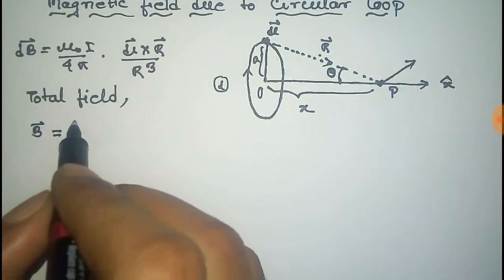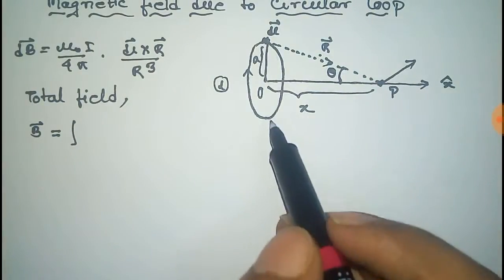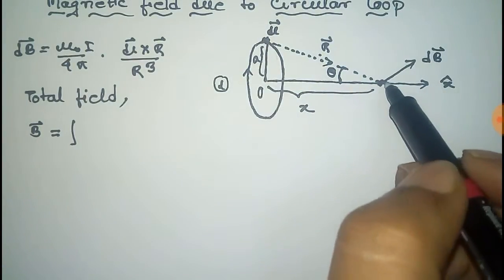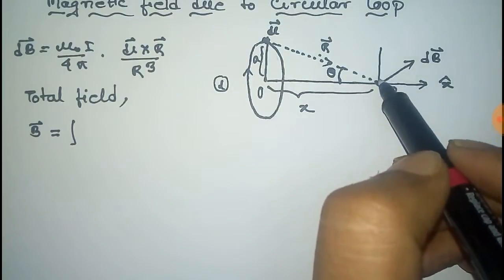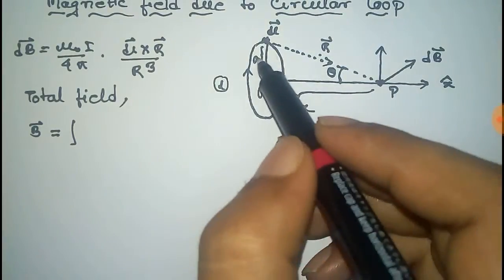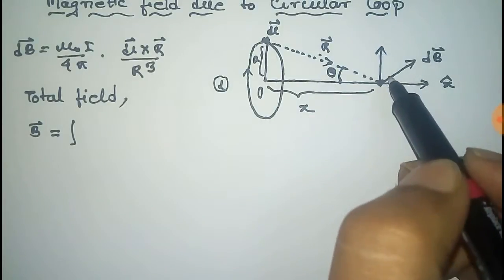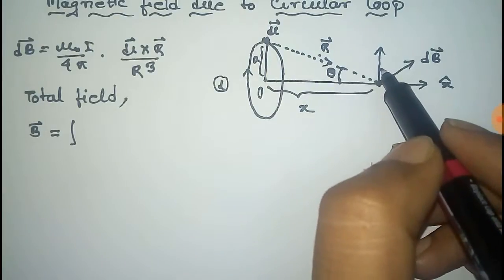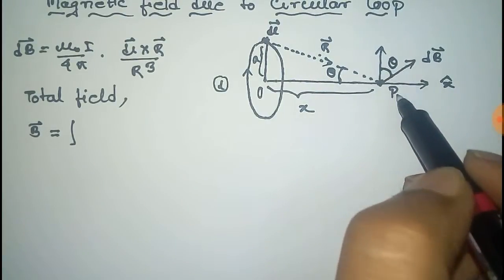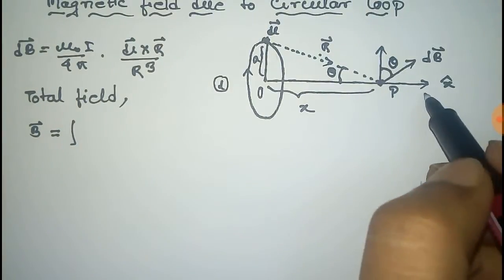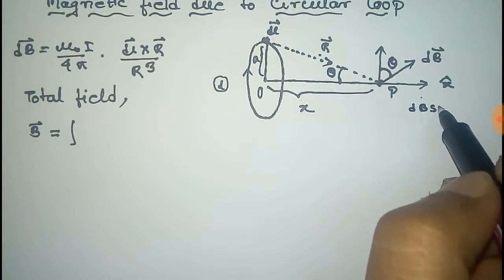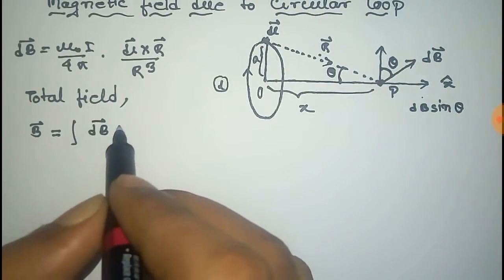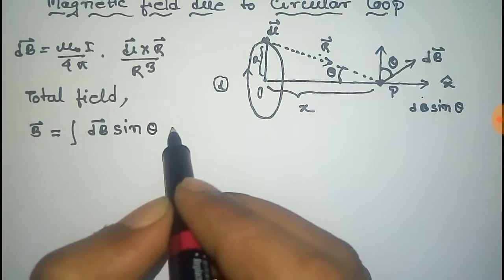Now look at this diagram: for dl directed in this direction, dB has a vertical component and a horizontal component. For the total length of the loop, the vertical components cancel out and only the horizontal component remains. That horizontal component is dB sine theta, and its direction is x-cap.